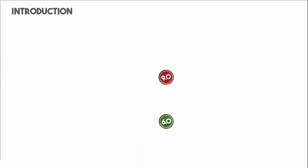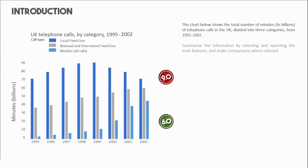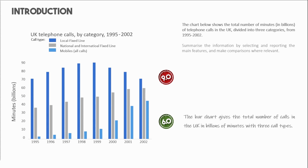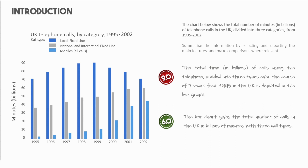The detailed video about the strategies and examples of writing an introduction and an overview is in a separate video — please subscribe and hit the notification bell so you do not miss any of our upcoming videos. For the introduction, this is the band 6.0 example: 'The bar chart gives the total number of calls in the UK in billions of minutes with three call types.' This is the band 9.0 example: 'The total time in billions of calls using the telephone, divided into three types over the course of seven years from 1995 in the UK, is depicted in the bar graph.'